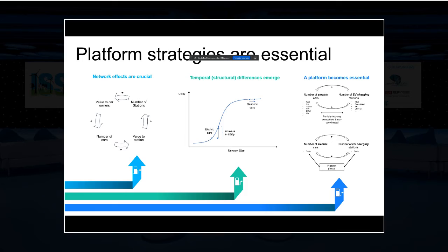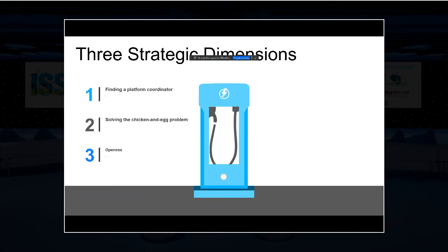Luckily, especially to showcase what we mean, Tesla is a counter example to that. Tesla does a pretty good job in understanding the platform dynamics of this market. What Tesla is doing is basically acting as a platform coordinator between the two sides of the electric car and EV charging stations. As you might know, Tesla is rolling out their own proprietary charging station network, at the same time as they are producing and selling cars. We'll give a couple of examples of where that is beneficial for Tesla in selling the system of electric mobility. What we highlight is that the industry needs to focus on three strategic dimensions. First, the industry needs to find a platform coordinator — someone who coordinates the two sides of network and vehicles. They need to solve the so-called chicken and egg problem — the problem that one side is not fully valuable without the other side, and where to start and how to create the incentives to grow both sides at the same time.